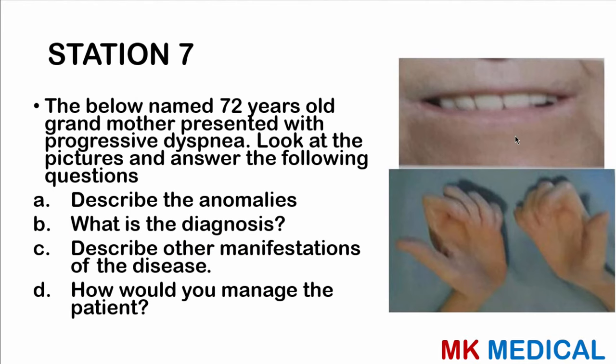Station 7. A 72-year-old grandmother presented with progressive dyspnea. Look at the picture and answer the following questions. Part A, describe the anomalies. Part B, what is the diagnosis? Part C, describe the manifestations of the disease. Part D, how would you manage the patient? I'll give you two seconds to think through this.